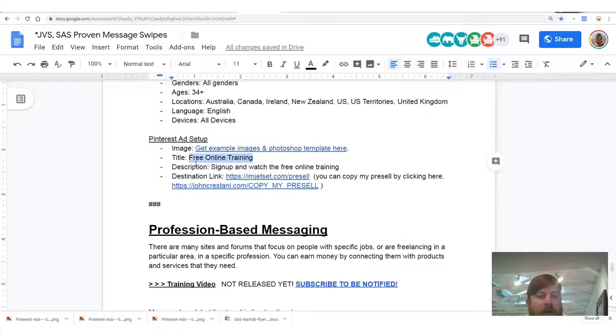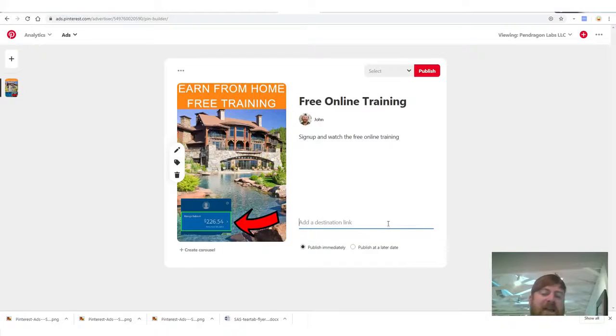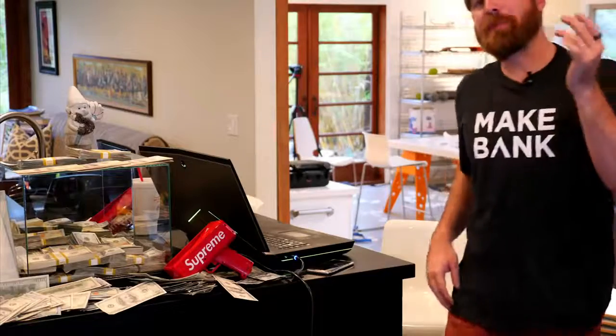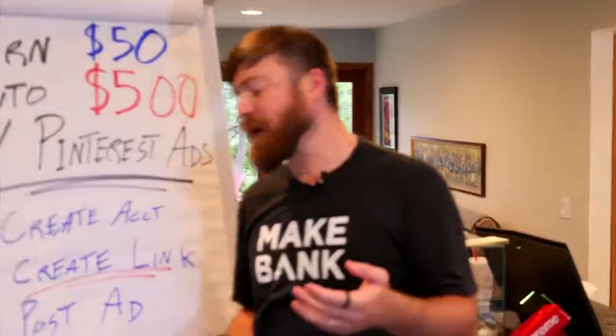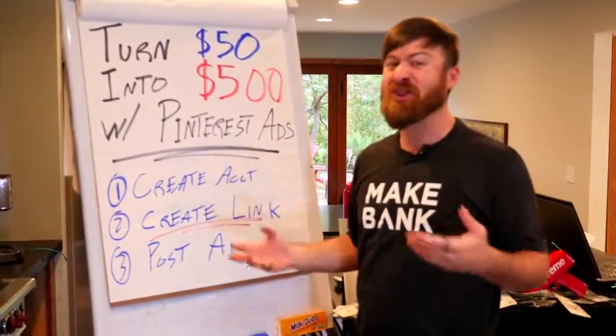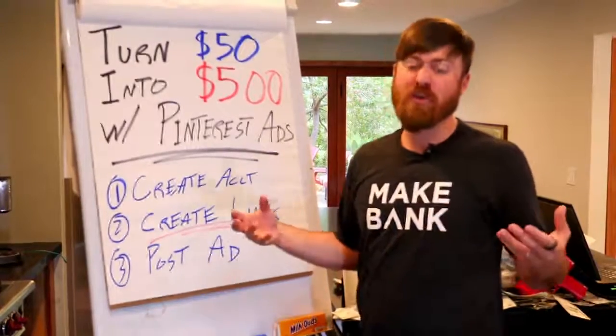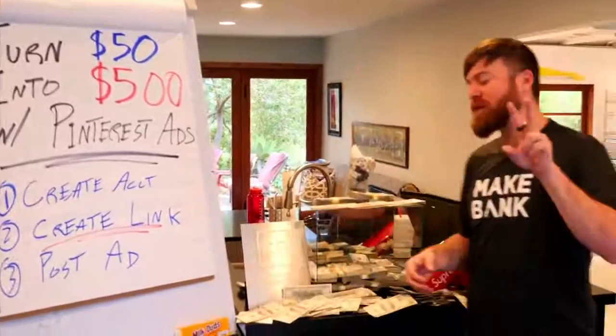Now we need to add a destination link — that brings us to step two: creating the link. For this method, you'll need to actually set up a website. You need your own pre-sell page. I recommend you use a domain host and get your own domain — I'll include my top recommended places to register a website below. After that, you'll sign up for ClickFunnels and copy my pre-sell page.